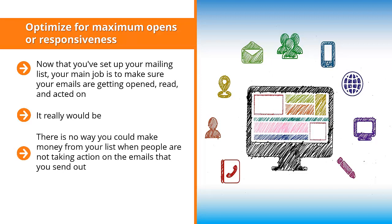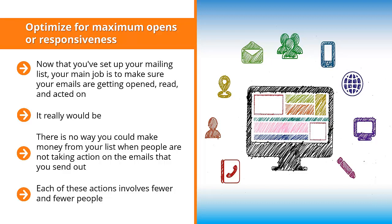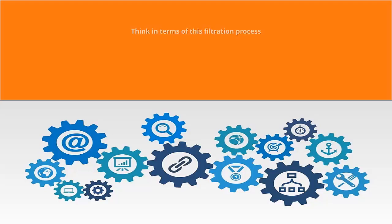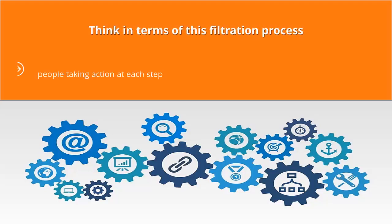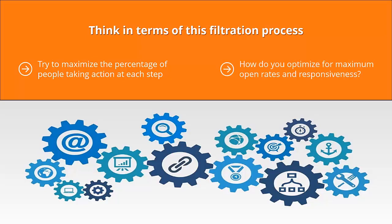If nobody is clicking on your links or reading your materials, your business is practically dead. There is no way you can make money from your list when people are not taking action on the emails you send out. You have to work actively to maximize the percentage of people opening, reading, and clicking on your emails. Think in terms of a filtration process: you can start with 1,000 people on your list, end up with only 100 opening your emails, and of those, only 20 might click the link in the body. Try to maximize the percentage taking action at each step.